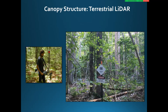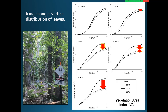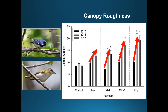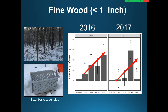Here is a graph of gap light index, and you can see that increase in light in the gaps, particularly in the mid-times-two and high treatments. We used terrestrial lidar to measure canopy structure. Results showed that icing changed the vertical distribution of leaves — with increased icing there was a loss in the upper canopy and an increase in the lower canopy. Results also showed an increase in canopy rugosity, which is a measure of the roughness of the canopy. For fine woody debris, we collected all woody material less than one inch in diameter in litter baskets, and you can see the first-year increase in fine woody debris with increasing treatment, and then a second-year pulse of fine woody debris with the mid-times-two treatment.